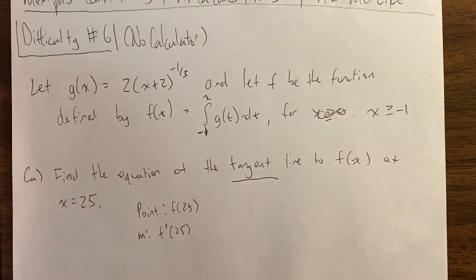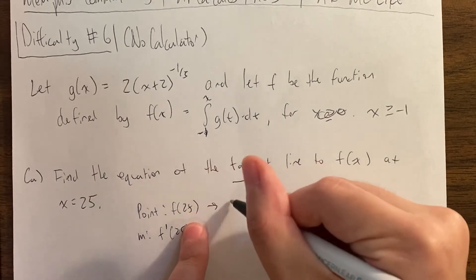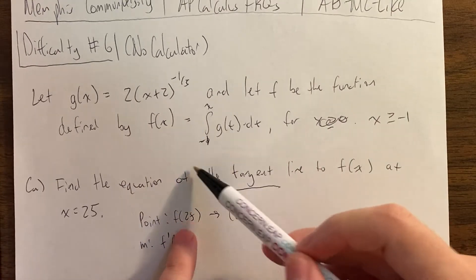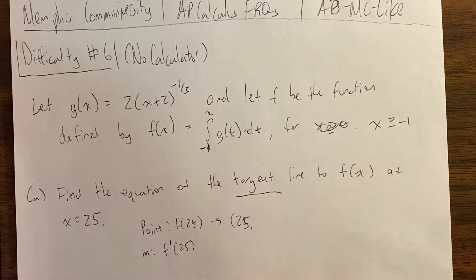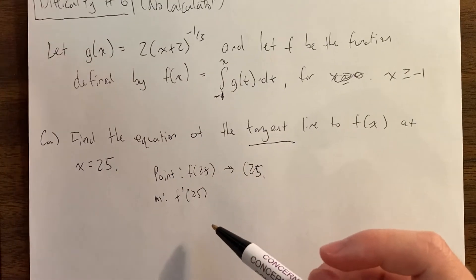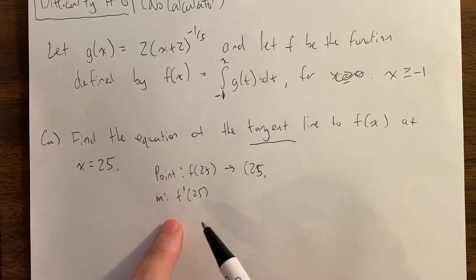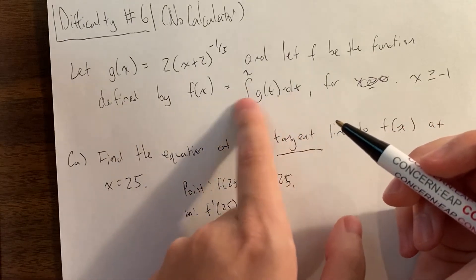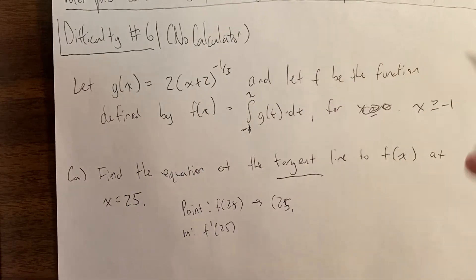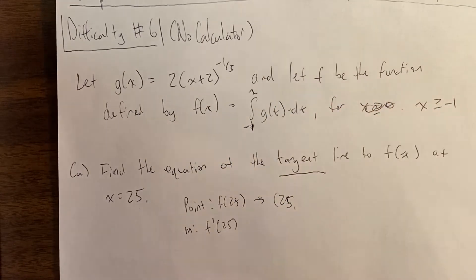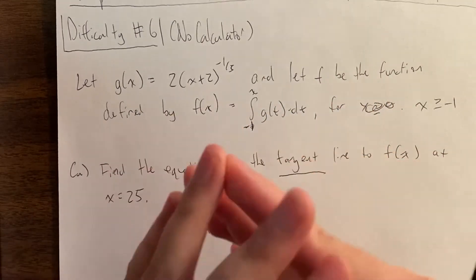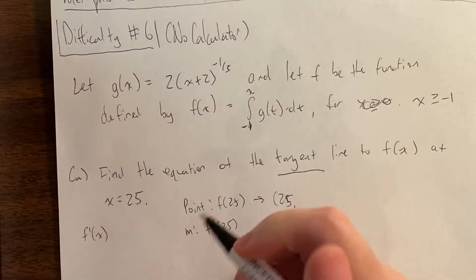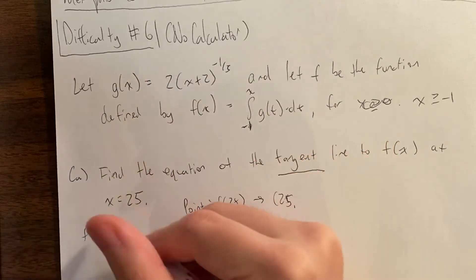Usually I go for the point first because it'll be (25, f(25)). But in this case, when we plug in 25 we actually have to do an integral — so that's actually going to be the harder part. Usually the slope is harder because you have to take a derivative, but in this case it's actually going to be the point that's harder. So I'm going to start off with the derivative. Remember that if you're taking a derivative of an integral by the fundamental theorem of calculus, derivatives and integrals are sort of inverse processes — they sort of cancel each other out. So f prime of x, which we'll use throughout this free response question, is g of x.